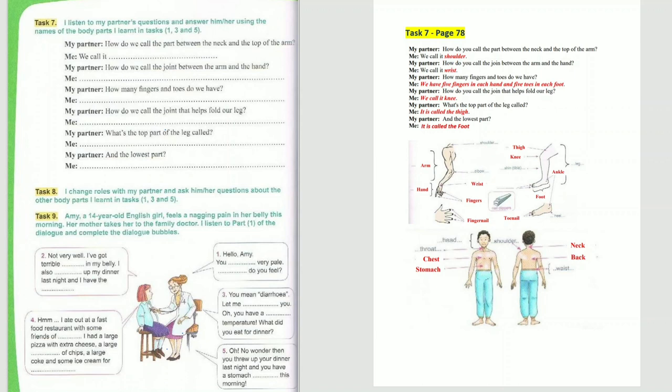How do you call the part between the neck and the top of the arm? We call it shoulder. How do you call the join between the arm and the hand? We call it wrist. How many fingers and toes do we have?